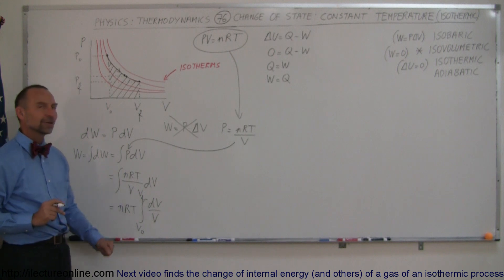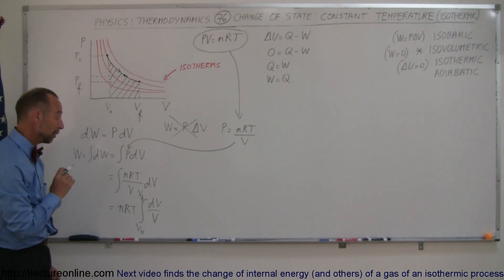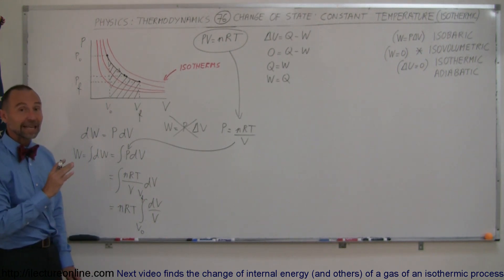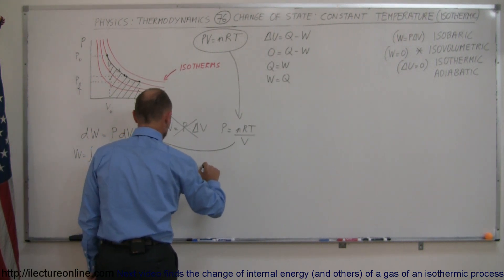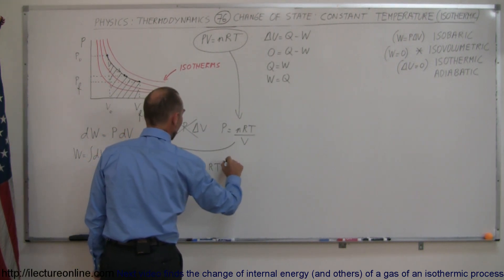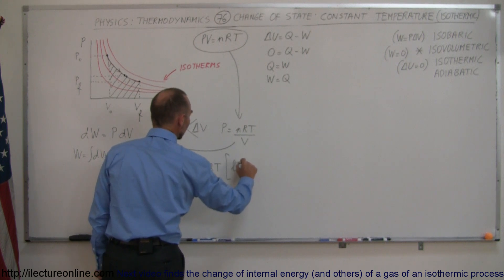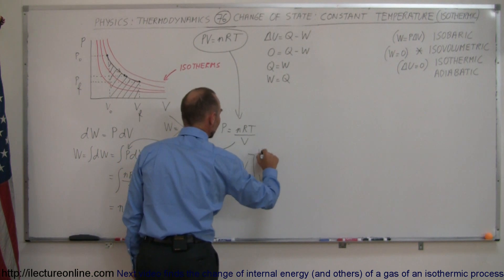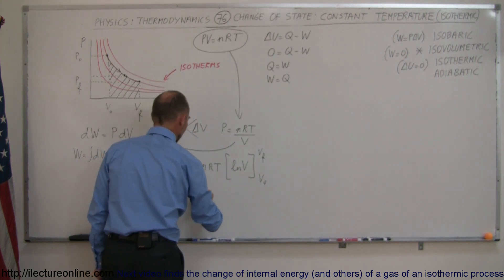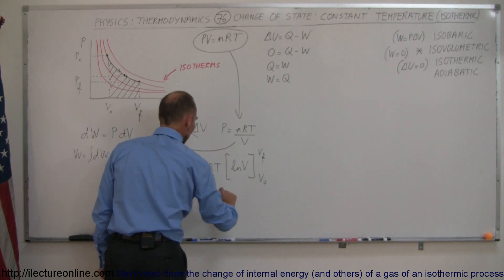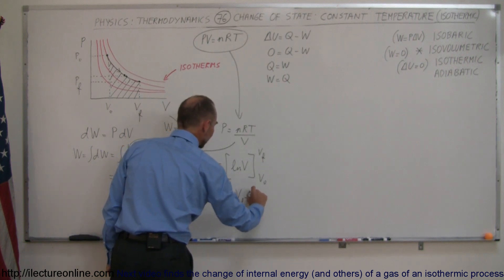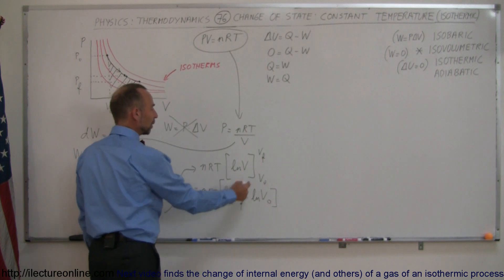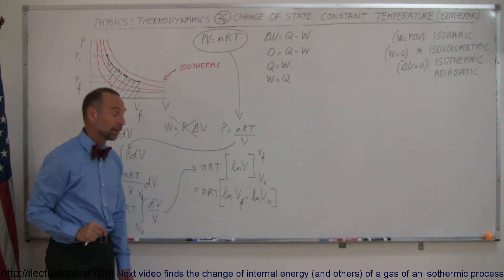All right, so what is the integral of dV over v? Well if you remember your calculus, that is equal to the natural log of v. So this can then be written as nRT times the natural log of v evaluated from v initial to v final, and so this becomes nRT times the natural log of v final minus the natural log of v initial, because the definition of that is we plug in the upper limit and subtract when we plug in the lower limit.